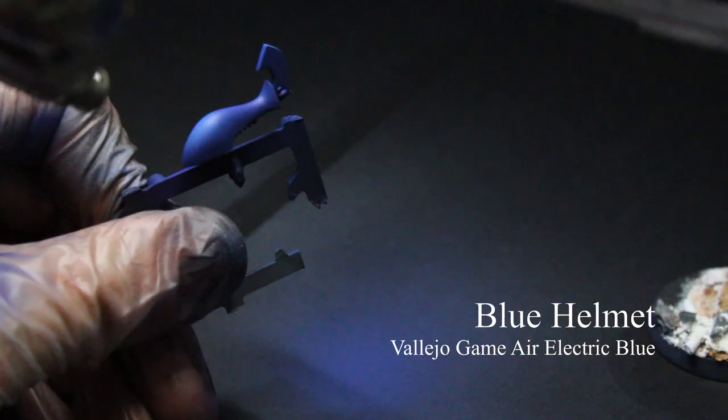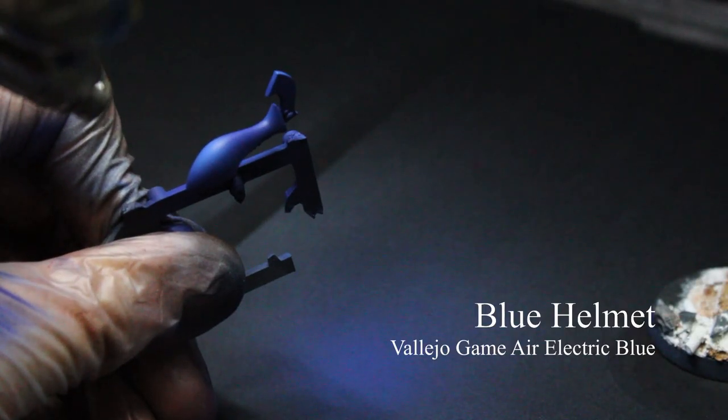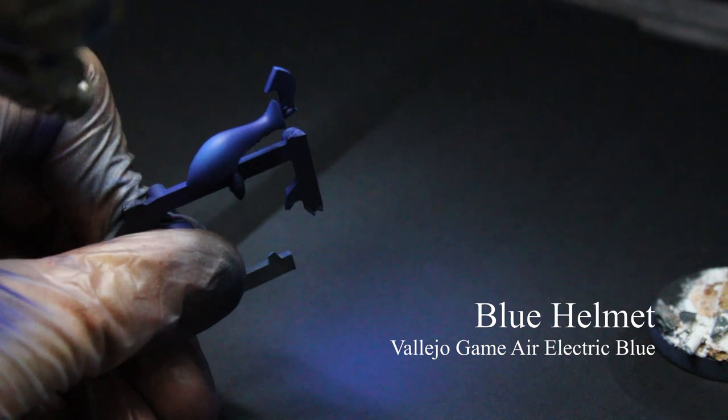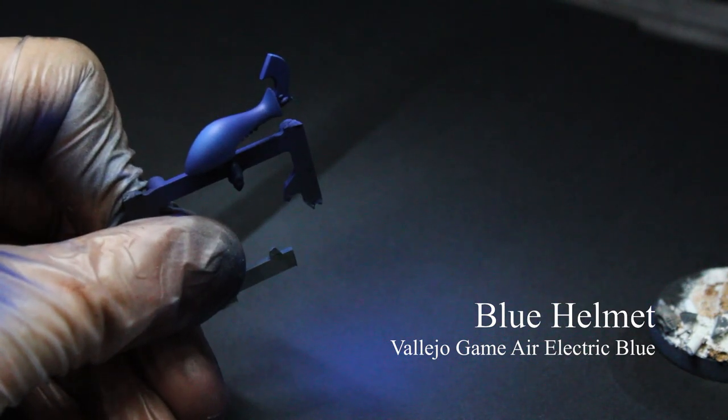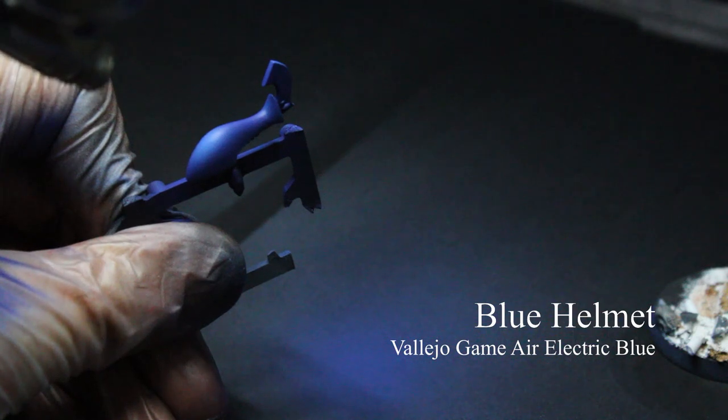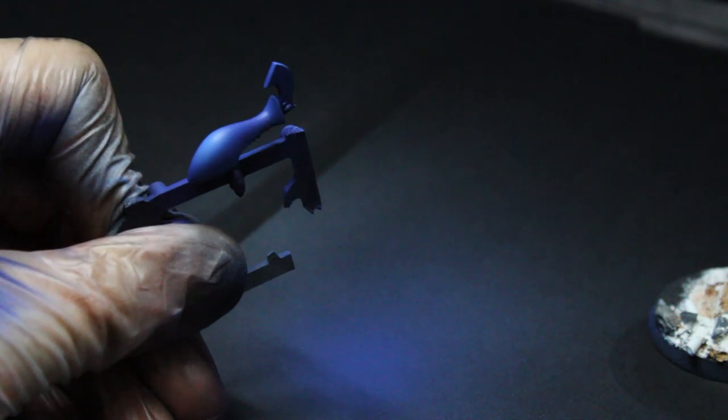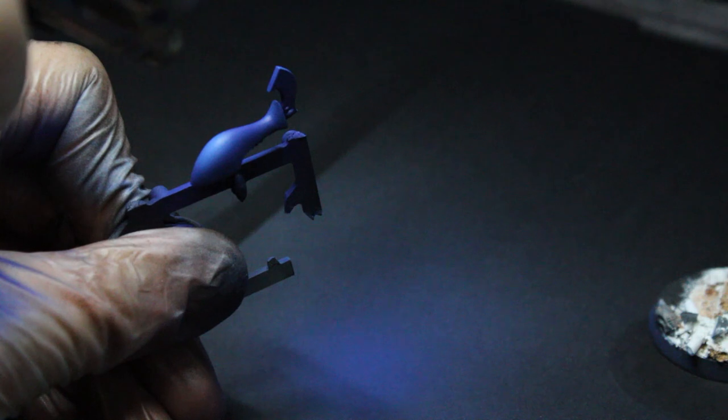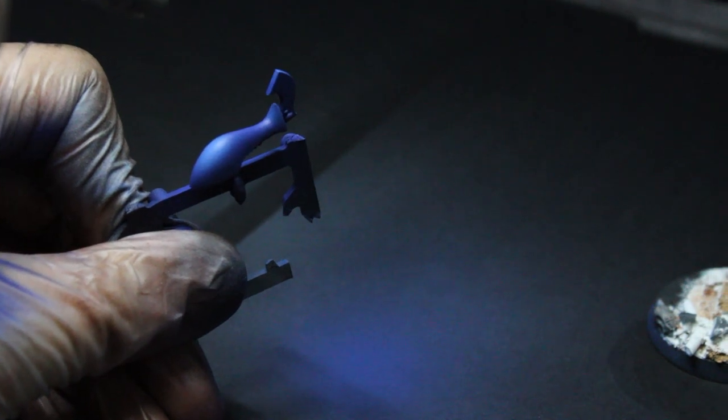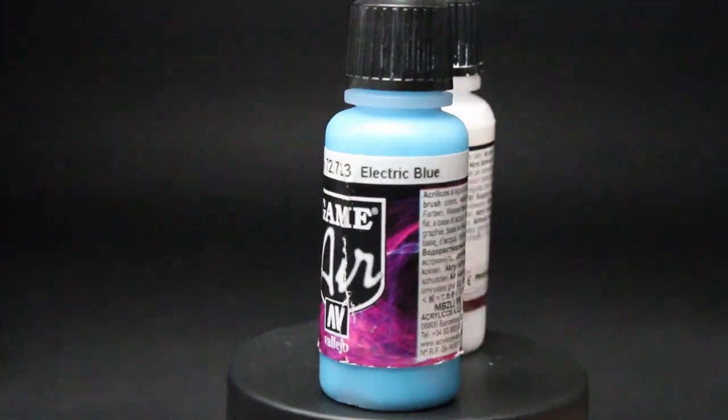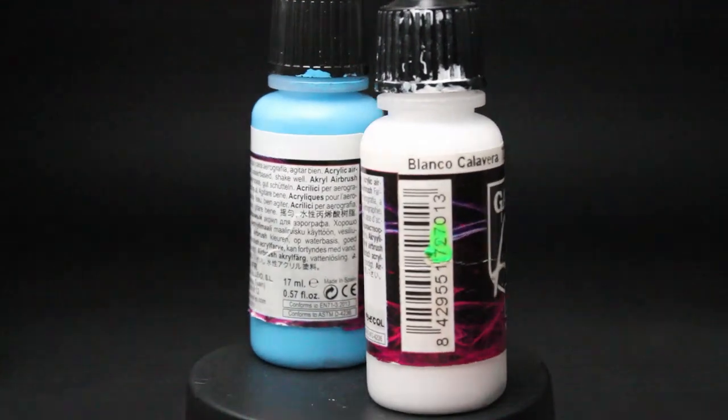We're almost done getting the blue down with Electric Blue from Vallejo Game Air. Thin this paint just a little bit more than the other layers, probably about 2 to 1 thinner to paint, and turn your PSI down to around 10 pounds because we want to be a little bit more accurate in our highlighting.